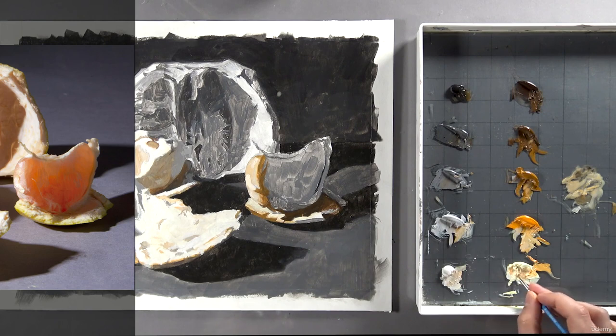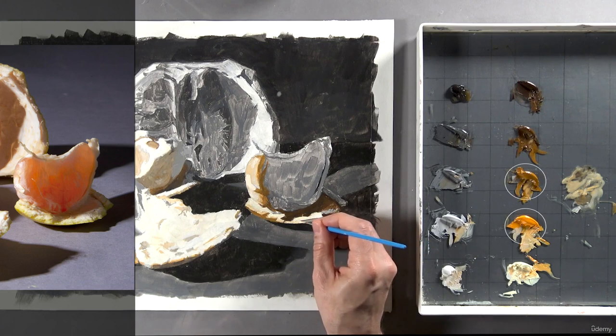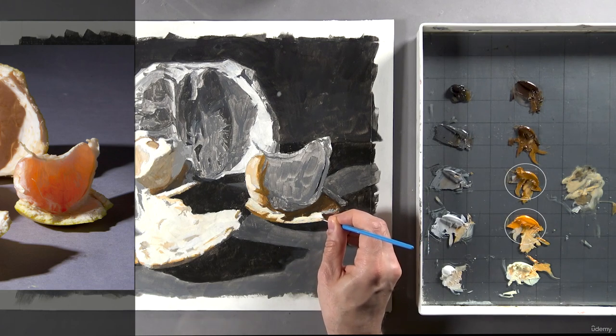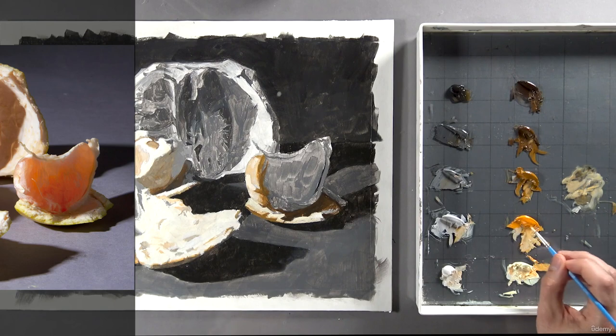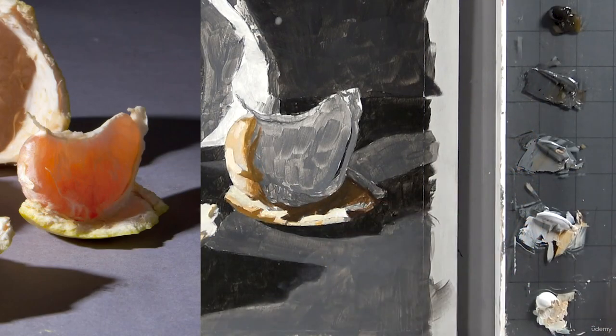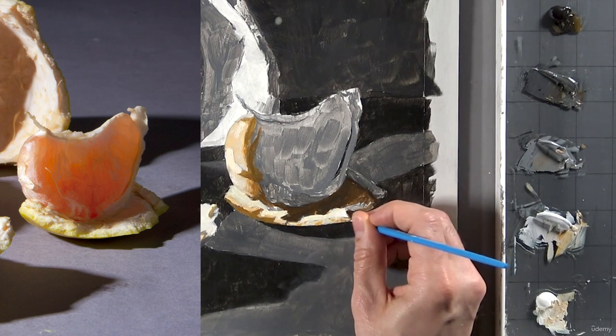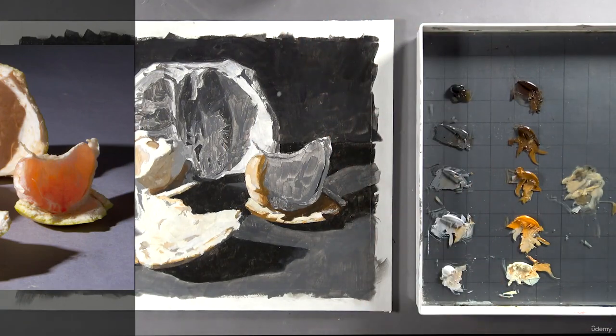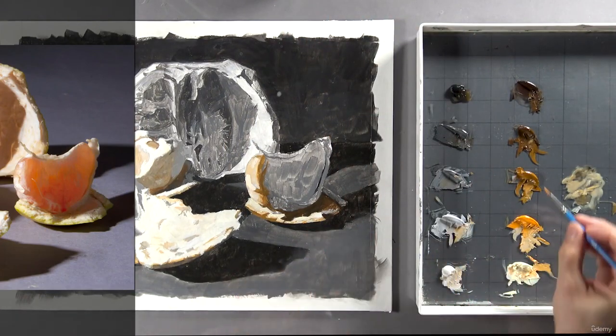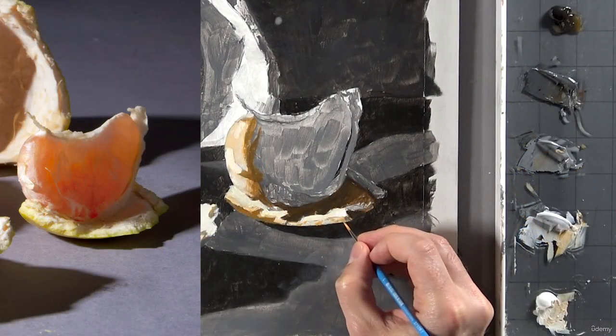So I'm going to fill this shape in completely with first value orange, then come back with some second and third value orange to start adding the texture. Most of this area in here is closer to third or fourth value gray, so lean towards your grayscale to mix these colors.